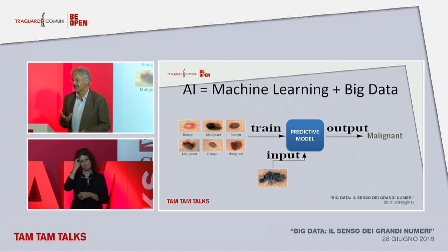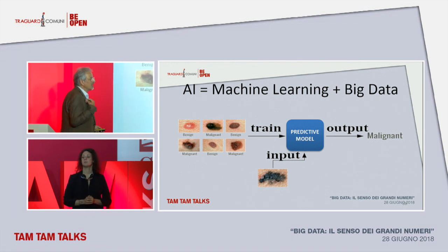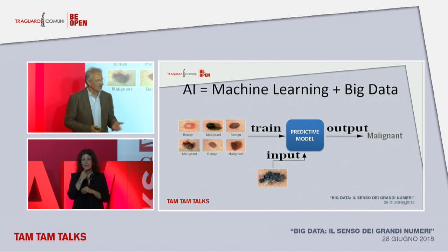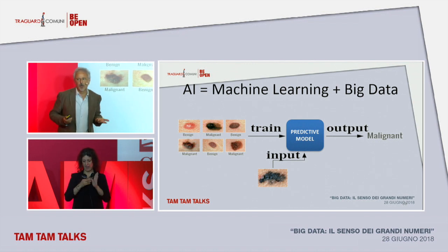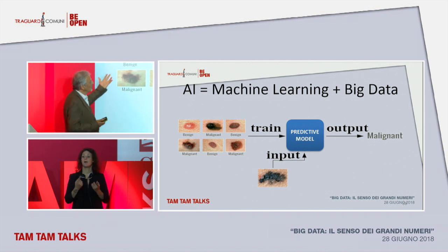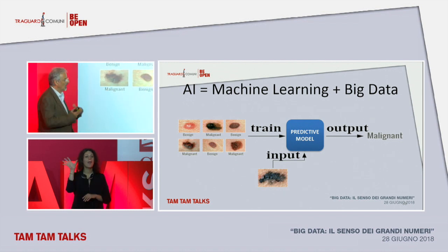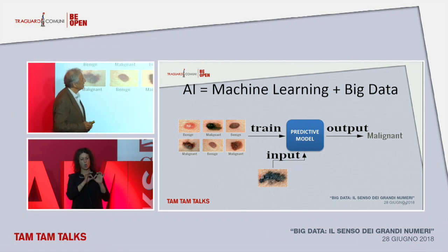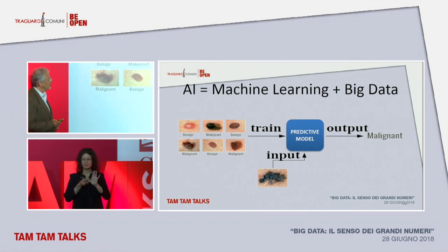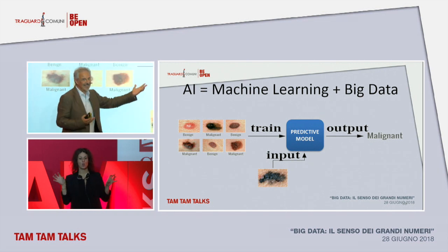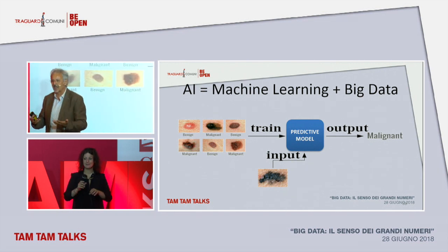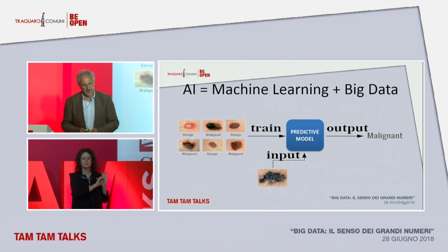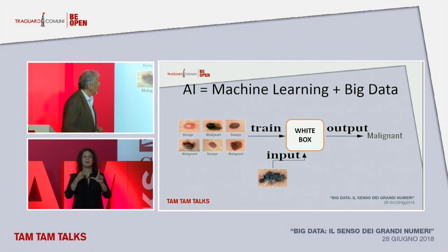Essentially, AI is learning from the data we leave behind. When we speak about artificial intelligence, you can observe a mole on your body and your skin. These are defined as malignant or benign, and there is a predictive model that learns from these pictures and can be applied to general situations.